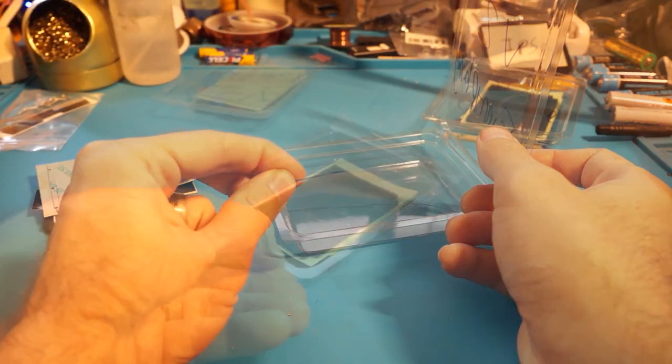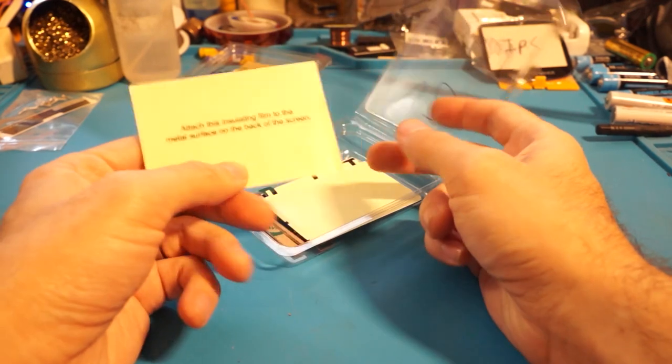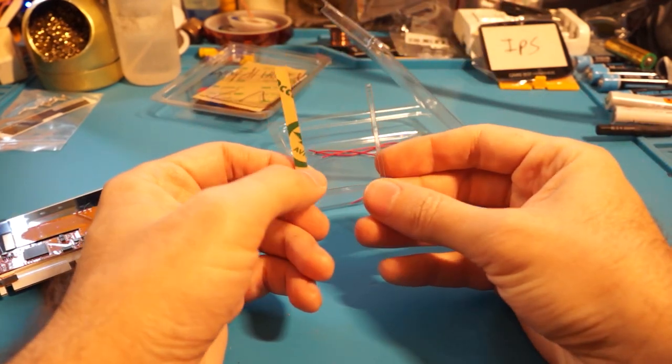In the unbranded kit, you'll get all of the above as well as an insulation sticker and some acrylic spacers for lining up the IPS display in the shell.